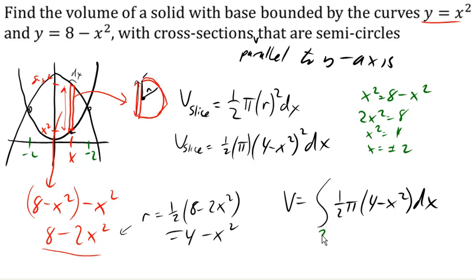So we're integrating from negative 2 to 2. 1 half pi r squared. Sorry, forgot my squared there. 4 minus x squared squared, squared, dx. There's the volume of that solid that we saw here.